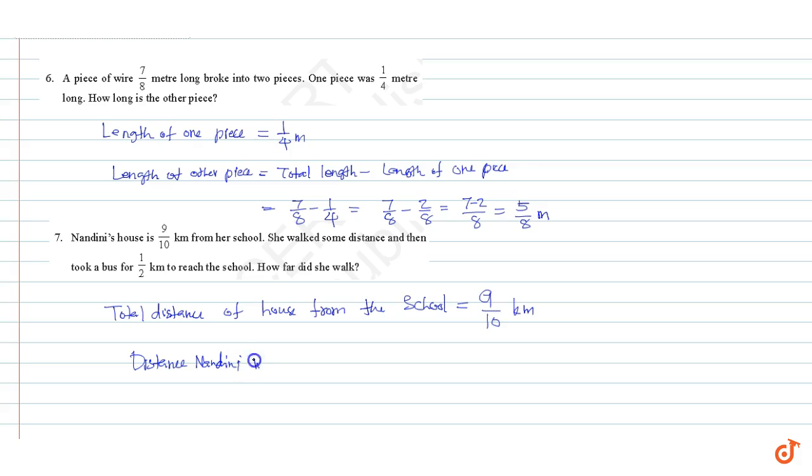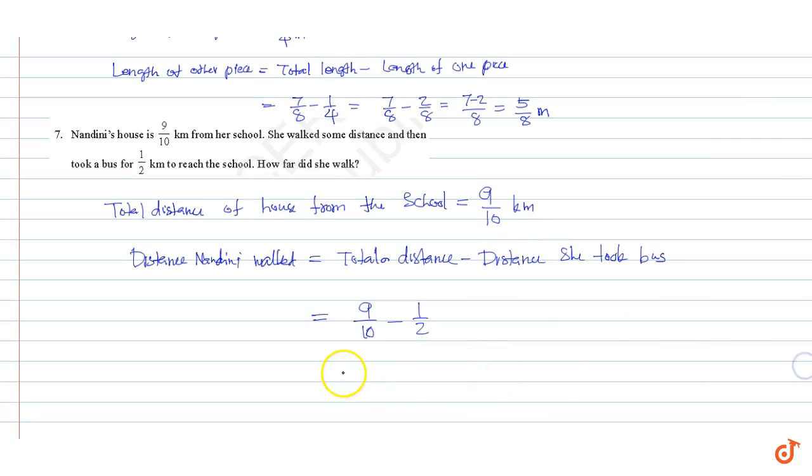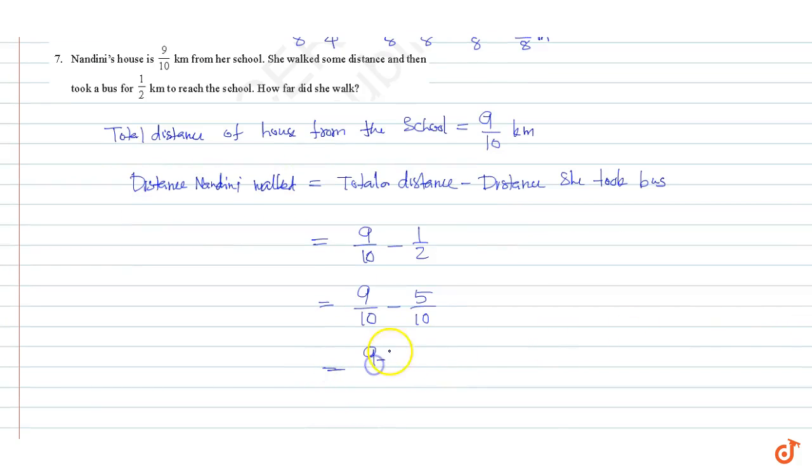Distance Nandini walked is equal to total distance minus distance she took the bus. This is equal to nine by ten minus one by two. Taking LCM as ten, we get nine by ten minus five by ten, which equals four by ten, equal to two by five kilometers. These are our answers.